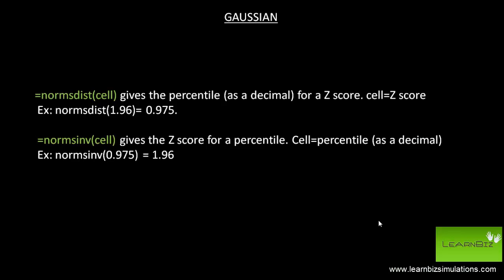Next, look at the Gaussian functions. The norm's dist gives the percentile for a z-score, while the norm's inverse gives the z-score for a percentile.